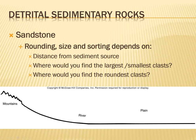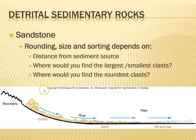Rounding, size, and sorting all depend on the distance from the sediment source and how fast the water moves. The faster it moves, the bigger the pieces are. The further it goes, the rounder it gets and the smaller the pieces become. Looking at mountains versus river versus plains: you get big angular pieces with lots of stuff mixed in near the mountains; the river produces smaller and smaller pieces; and finally on the plain, where the water doesn't move very fast at all, you get your silts and clays.